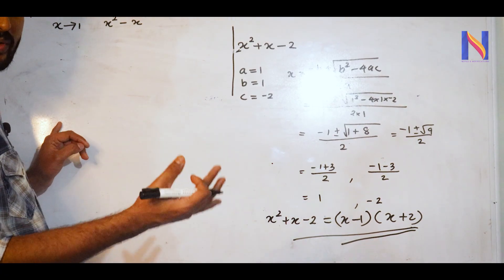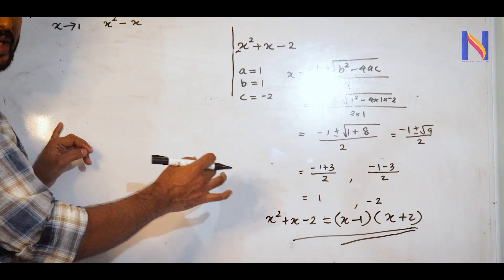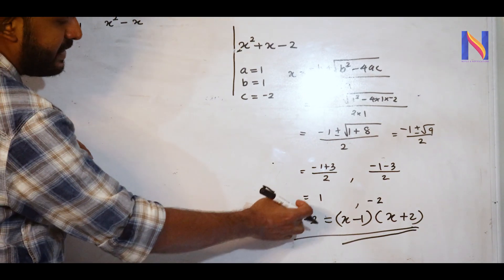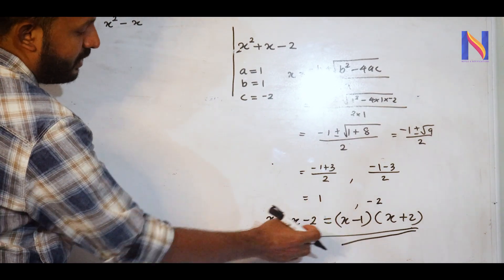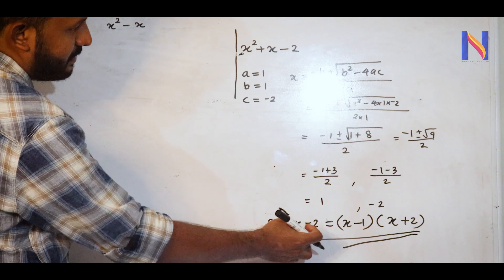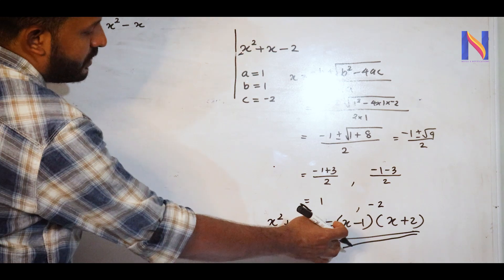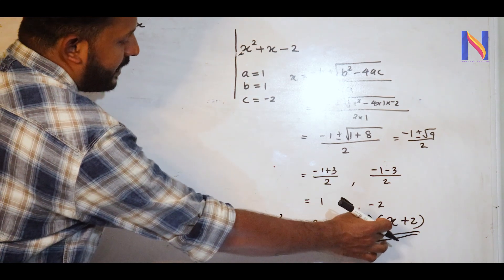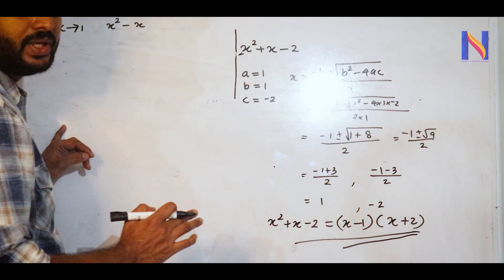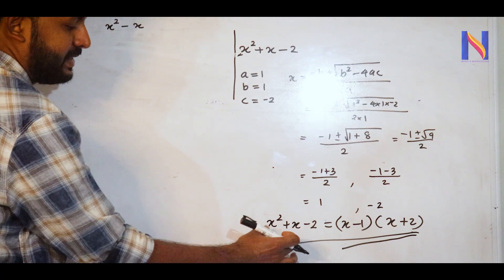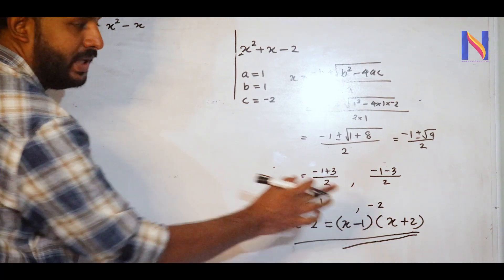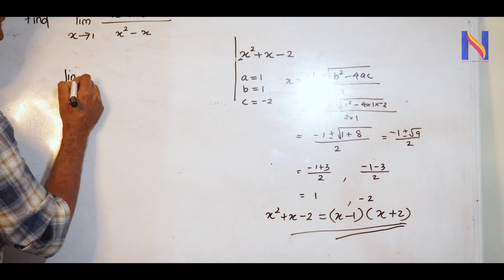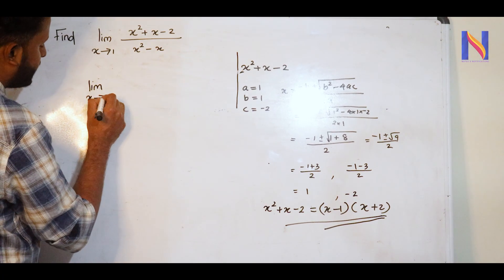So the factorization of x² + x − 2 is (x − 1)(x + 2), since the roots are x = 1 and x = −2. The denominator x² − 1 factorizes as (x − 1)(x + 1).